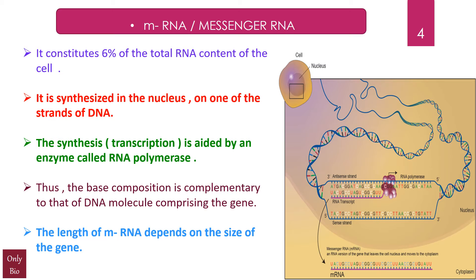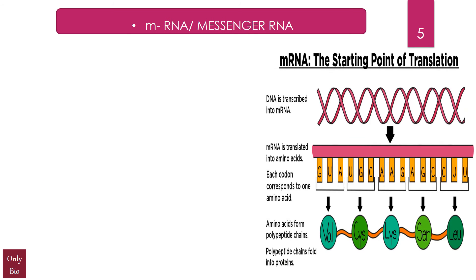Whichever strand carries the genetic information is going to be copied. When RNA polymerase plays its role to synthesize RNA, instead of thymine we find uracil. This is complementary to the strand of DNA from where it is being copied. One of the DNA strands acts as a template and is utilized by RNA polymerase to build its own structure. The length of the mRNA depends on the size of the gene.